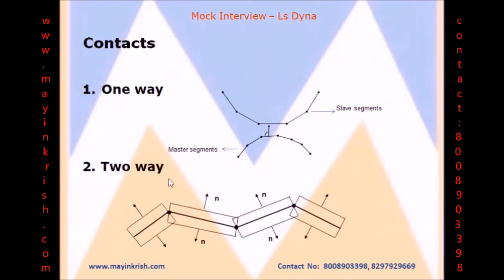Two-way contacts are nothing but the symmetric contacts. Here, the slave nodes are tested with the penetration with master segments and master nodes are tested for penetration into the slave segments. It's accurate but more time-consuming as contact friction or checking is from either sides.